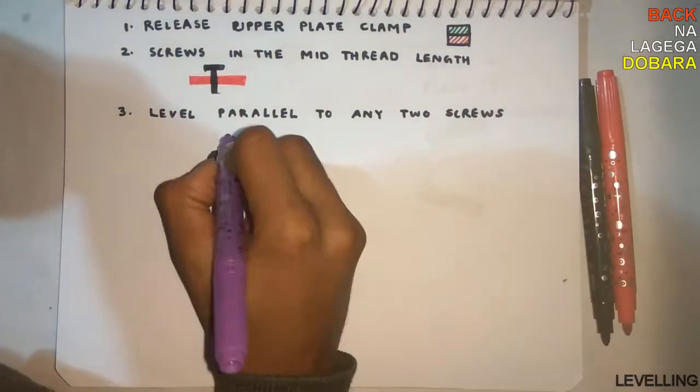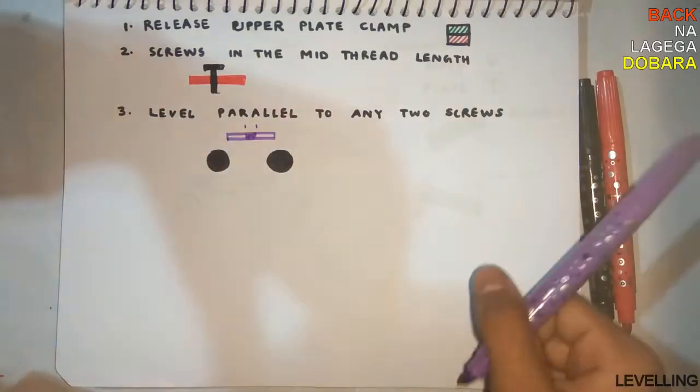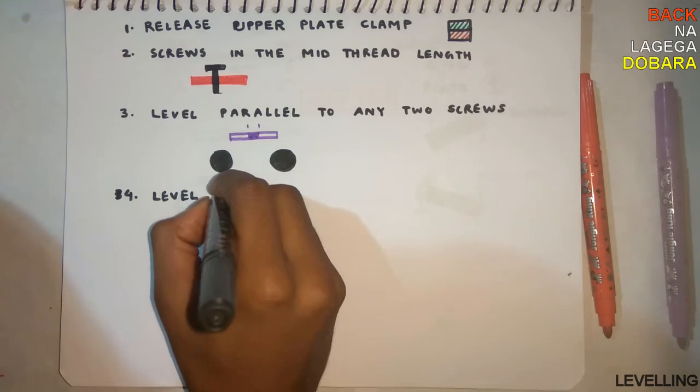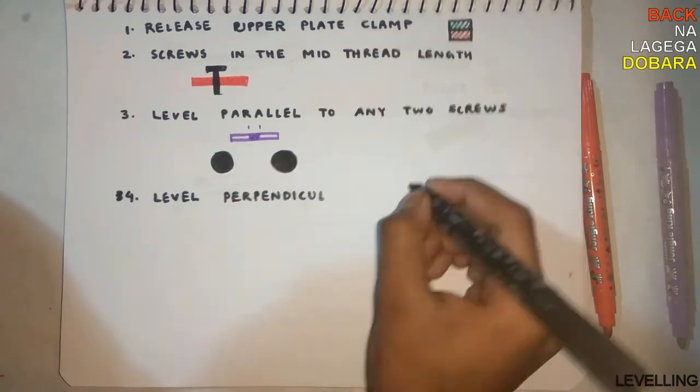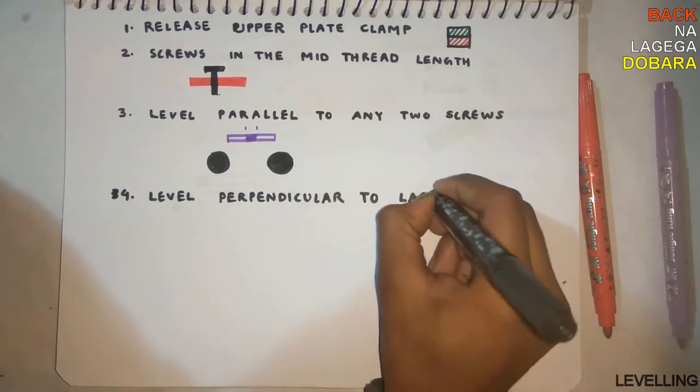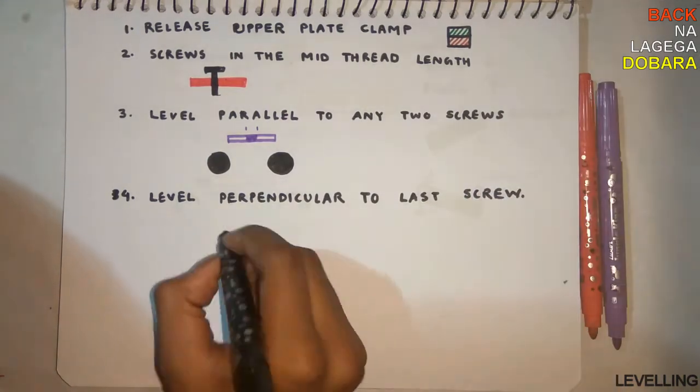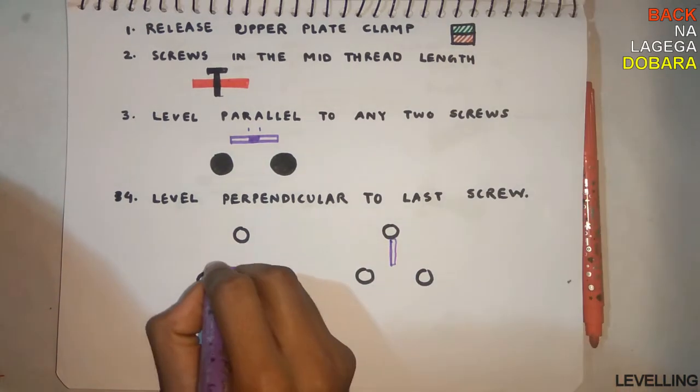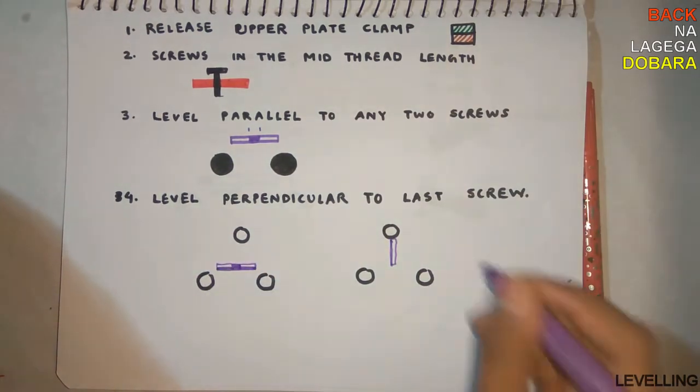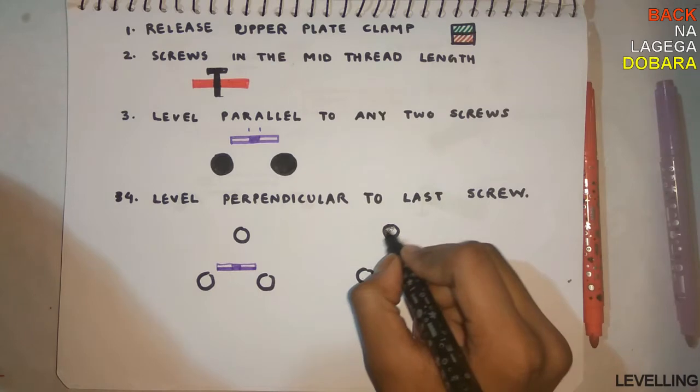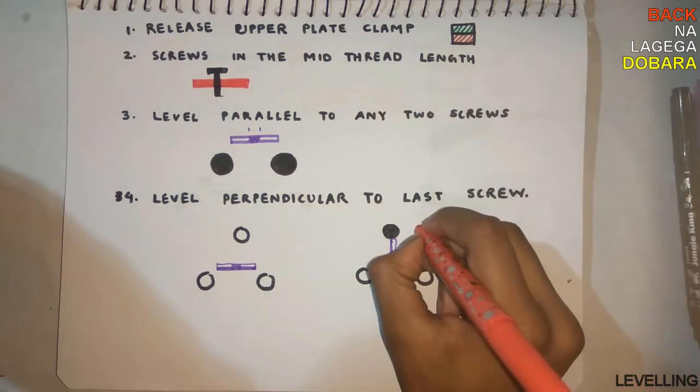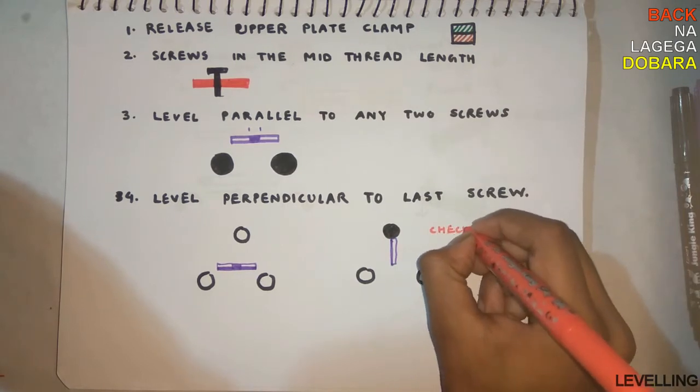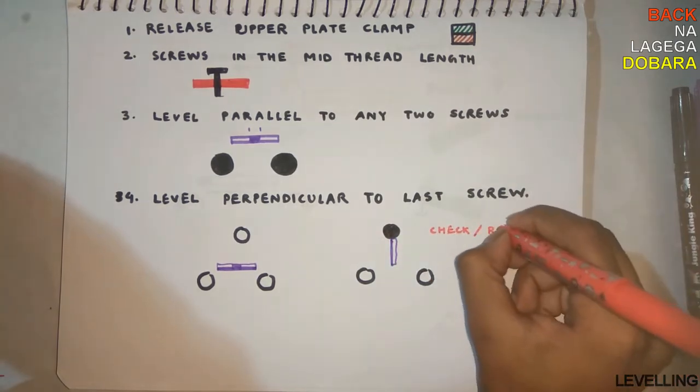Once the level is set, level perpendicular to the last screw. Initially it was like this, now we want it on the perpendicular side. Note that the level will shift, so just check or rotate the third screw according to the level movement.